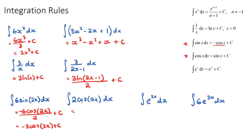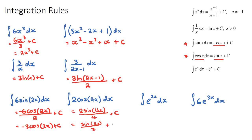A cosine function integrates to positive sine. So we'll have 2 positive sin(4x), the derivative of what was inside the bracket — which is 4 — goes on the bottom, plus c. This simplifies to sin(4x) over 2 plus c.